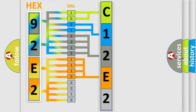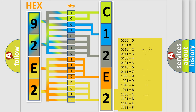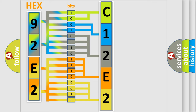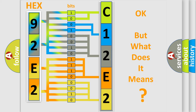A single byte conceals 256 possible combinations. We now know in what way the diagnostic tool translates the received information into a more comprehensible format. The number itself does not make sense to us if we cannot assign information about what it actually expresses.